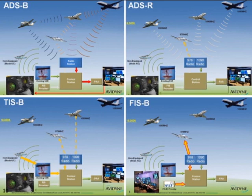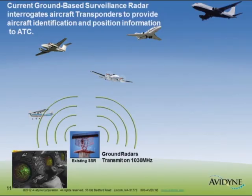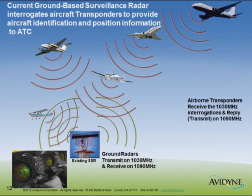Let's talk about what's going on now. The current ground-based surveillance radar interrogates aircraft transponders and transmits on 1030 MHz — it sends out an interrogation. Your transponder receives that 1030 MHz interrogation and then replies on 1090 MHz back to ATC. That's how we've done radar separation for years.